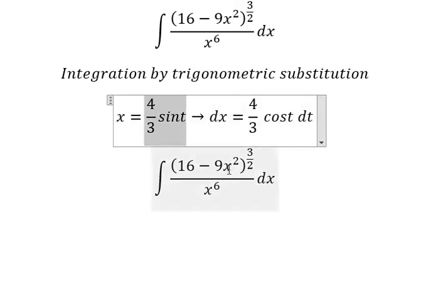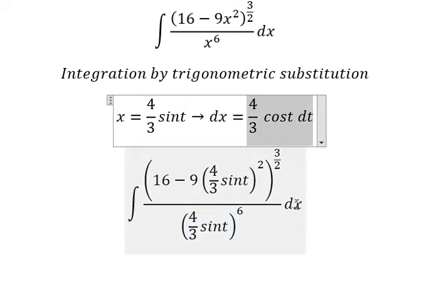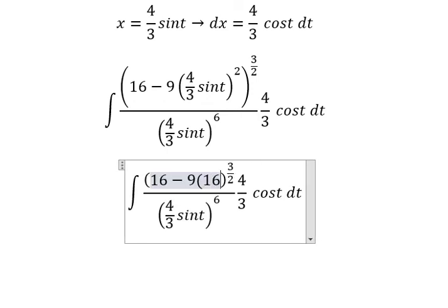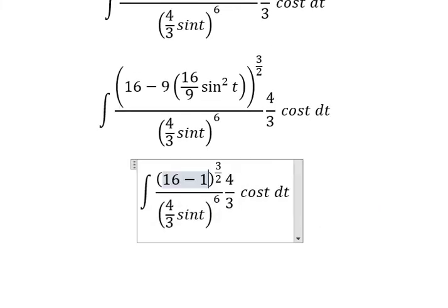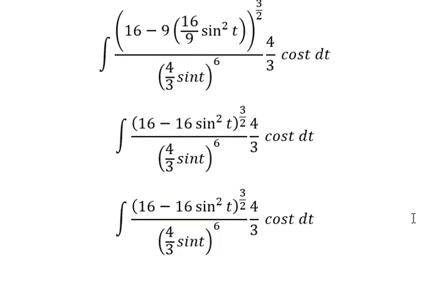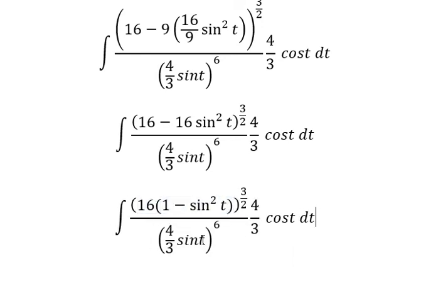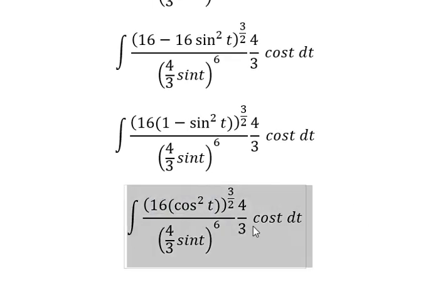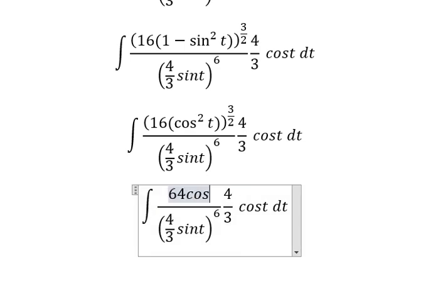I will substitute these into the integral. The x term is replaced by this expression, and we have 16 over 9 sine t squared. Now we simplify: the factor of 16 allows factorization, giving us cosine t squared. Then 16 to the power of 3 over 2 gives us 64, and we have cosine t to the power of 3.